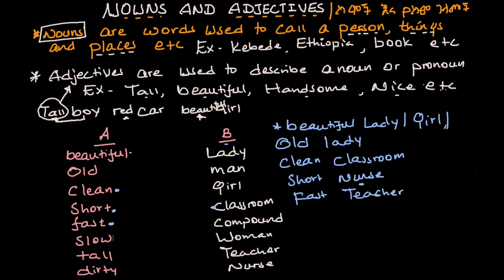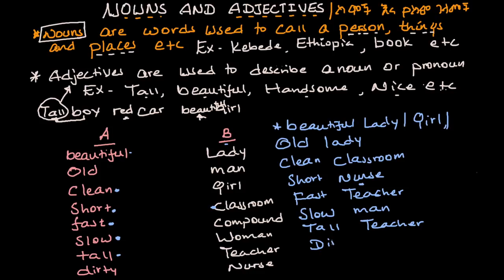Fast — fast teacher, fast girl. Slow — slow man. Tall — tall man, tall teacher. Dirty — dirty compound.